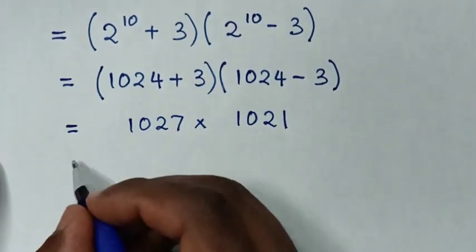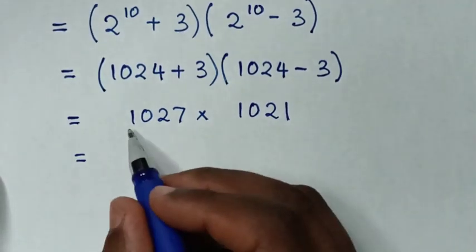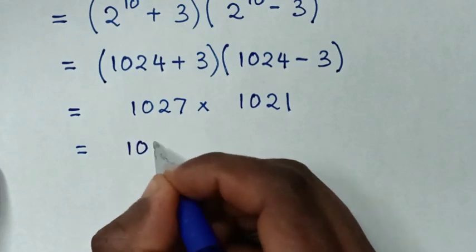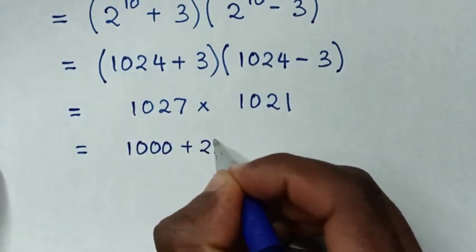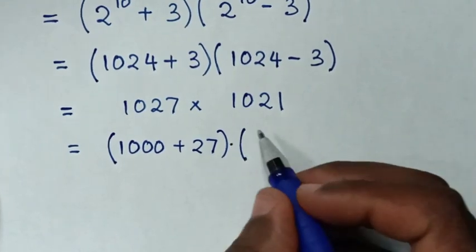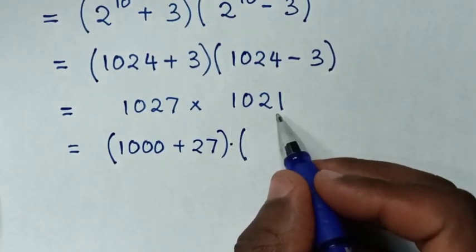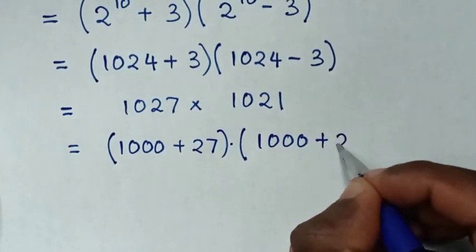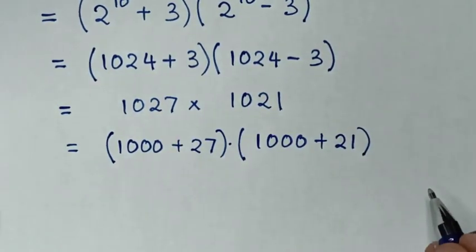The next step: rewrite 1027 to have a common 1000 as (1000 + 27), times 1021 which is the same as (1000 + 21).